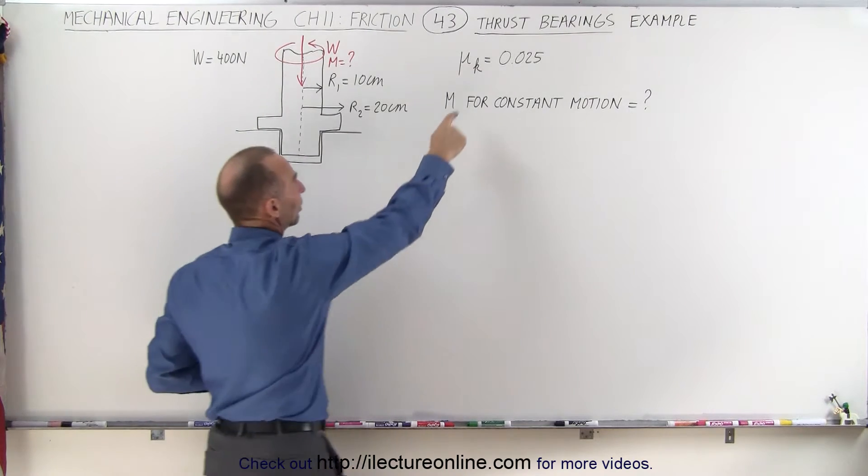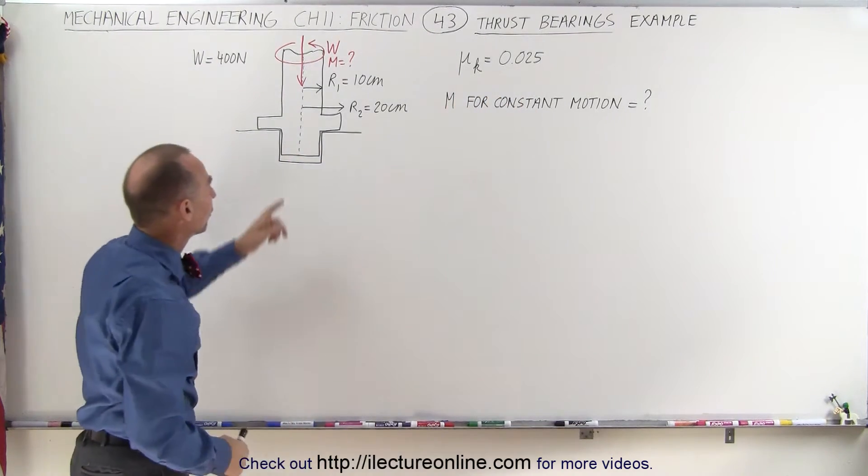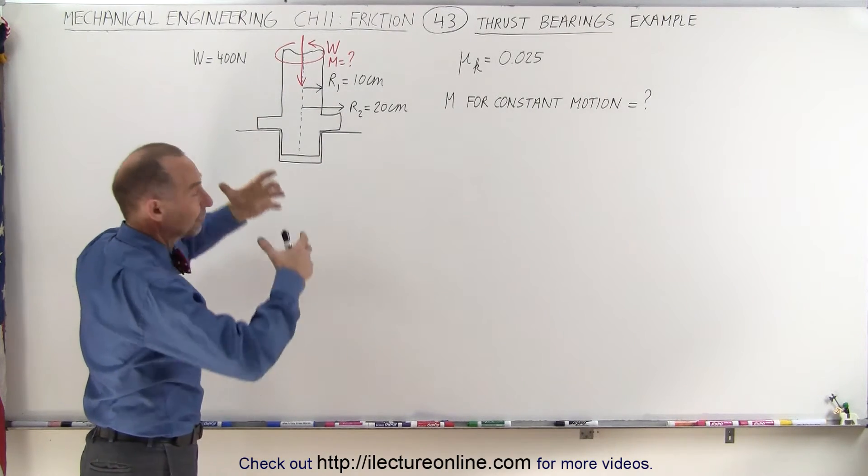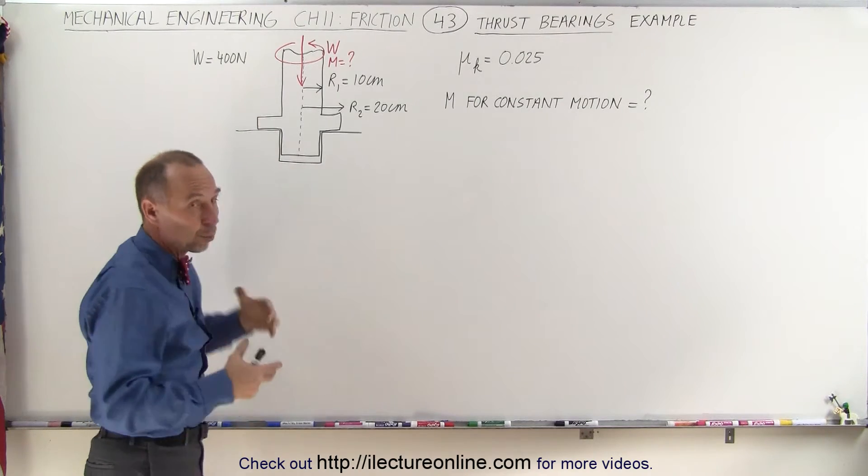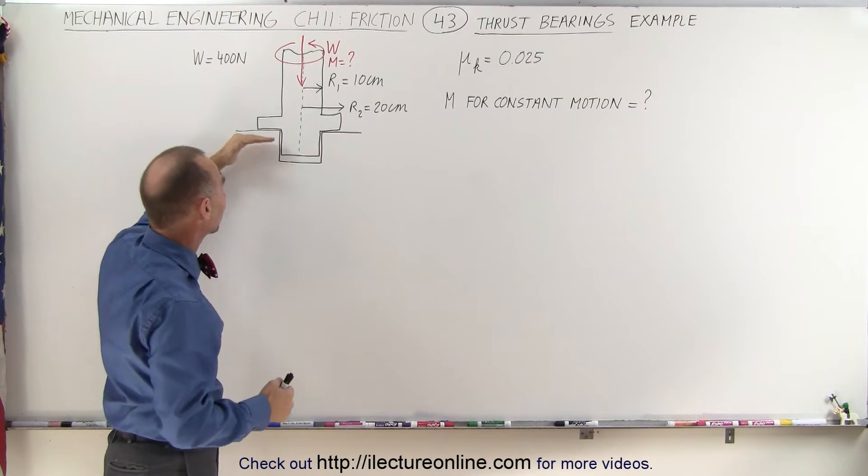And therefore we need the kinetic coefficient of friction, which in this case is 0.025. We know the radius of the actual bearing and the radius of the sleeve, and we know that the weight of the bearing is 400 newtons, which will become the force by which the bearing is being pushed against the housing.